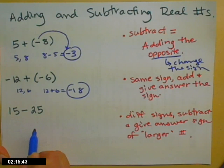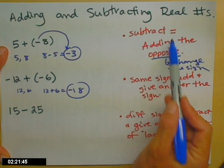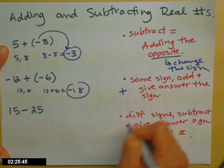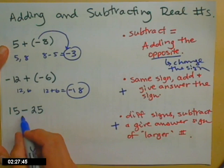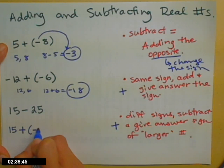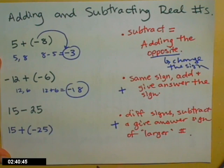This last one, I actually have a subtraction sign. I have 15 minus 25. But subtracting is the same thing as adding the opposite. So these two rules here are when we have adding in the middle. So I need to change this third problem to have an adding in the middle. So 15 stays the same. But now instead of subtracting 25, I'm going to add the opposite of 25. I'm going to add a negative 25.